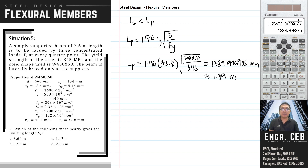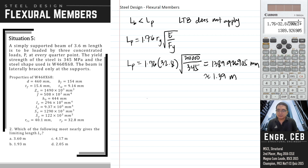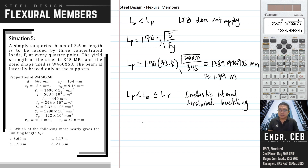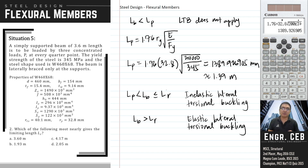Next problem: which of the following most nearly gives the limiting length Lr? Let us complete the criteria for lateral torsional buckling. If Lb is less than Lp, lateral torsional buckling does not apply. If Lb is greater than Lp but less than or equal to Lr, we have inelastic lateral torsional buckling. If Lb is greater than Lr, we have elastic lateral torsional buckling.